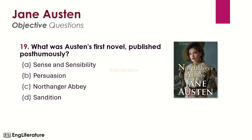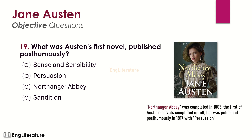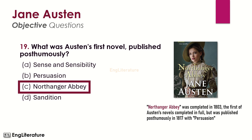What was Austen's first novel published posthumously? Northanger Abbey was completed in 1803, the first of Austen's novels completed in full, but was published posthumously in 1817 with Persuasion. The right choice is number C — Northanger Abbey was Austen's first novel published posthumously.